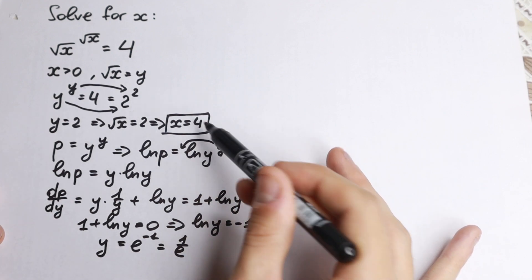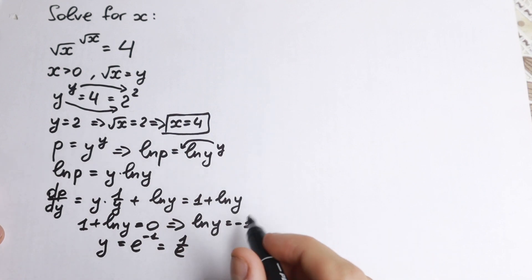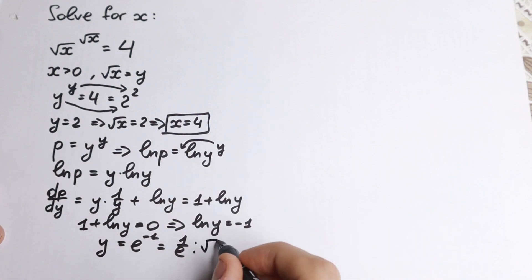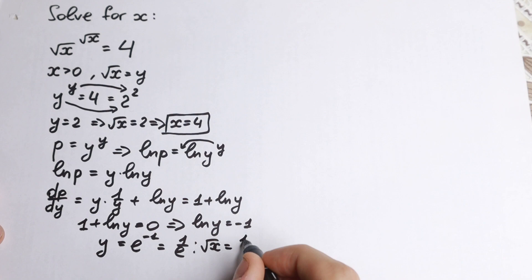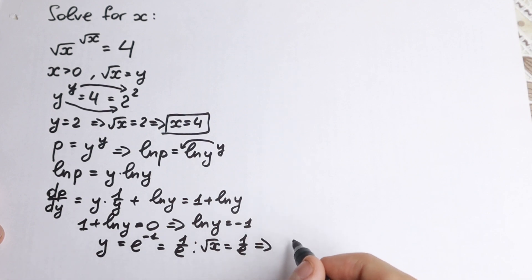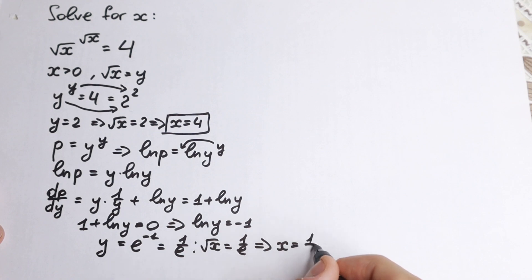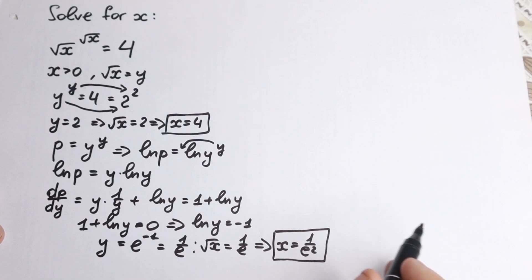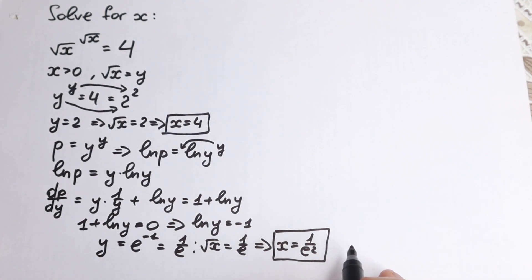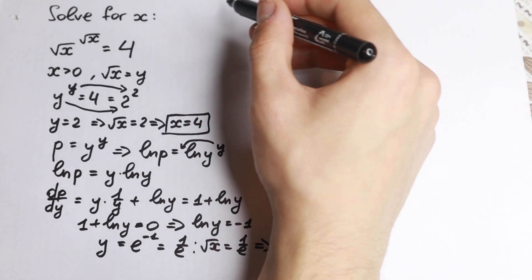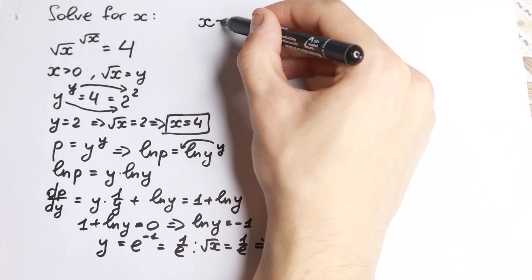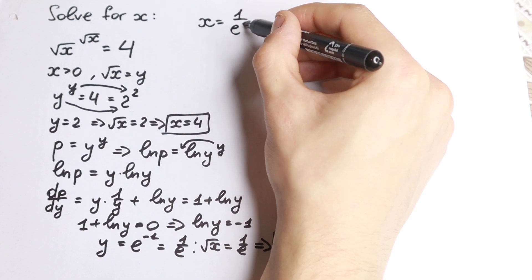Going back to our substitution: square root of x equals 1 over e. Squaring both sides gives x equals 1 over e squared. This is our point of minimum or maximum — we haven't confirmed which yet.